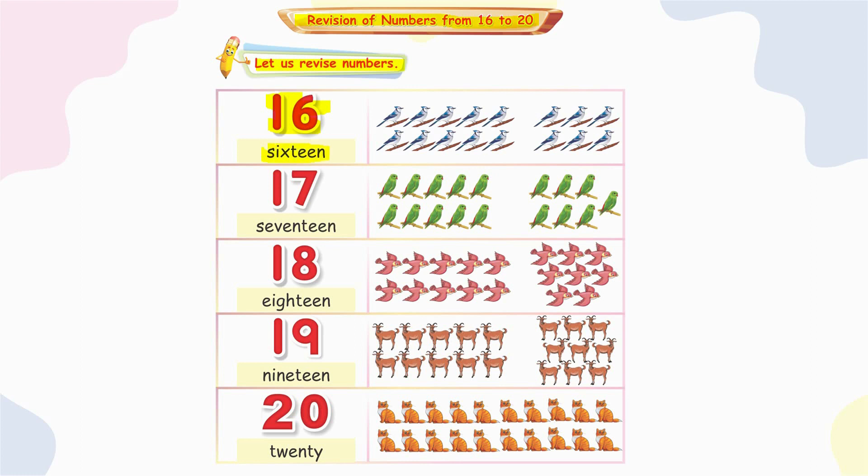17. One ten and seven ones make 17. S-E-V-E-N-T-E-E-N, seventeen. Here are 17 parrots.